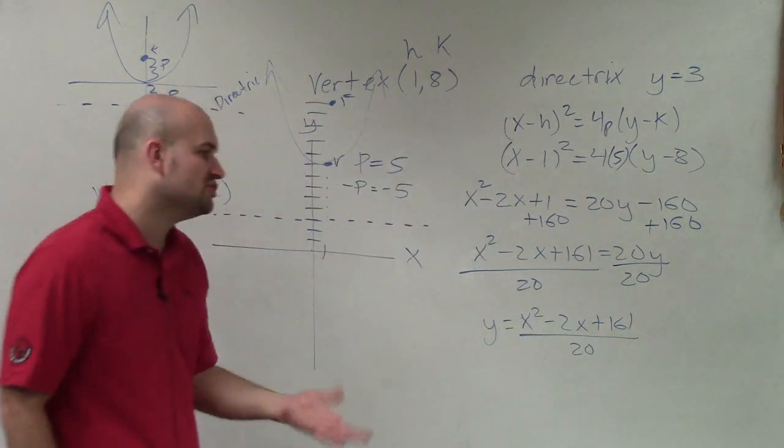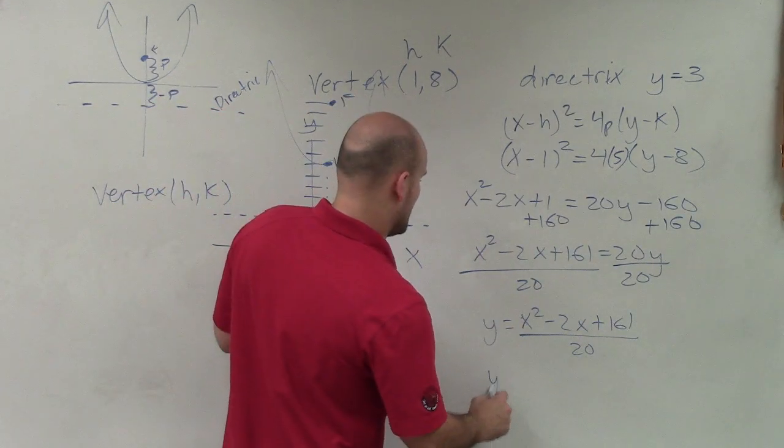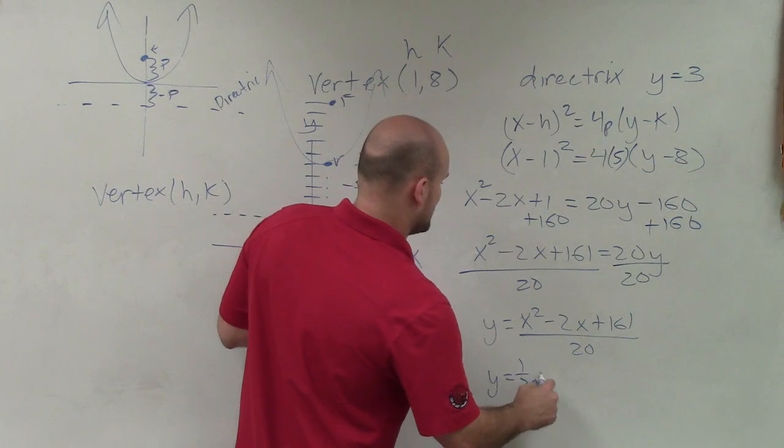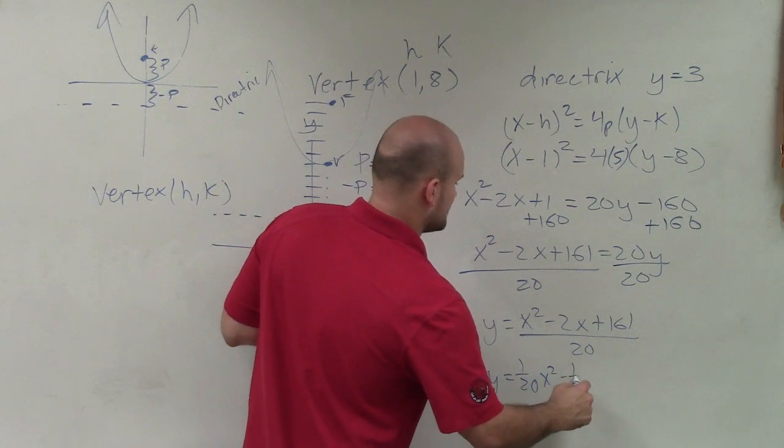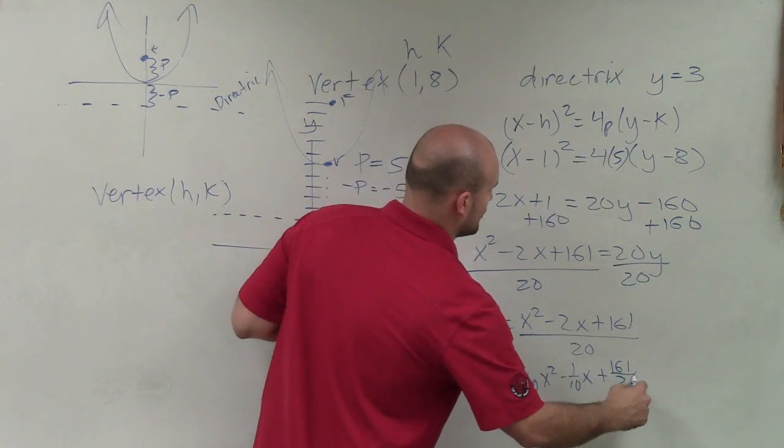Now, typically, we usually like to be able to reduce this. So I'm going to divide the 20 into all of these terms. So I have y = (1/20)x² - (1/10)x + 161/20.